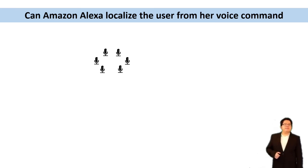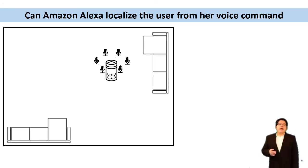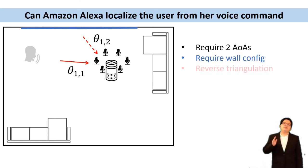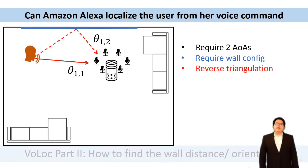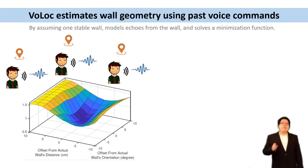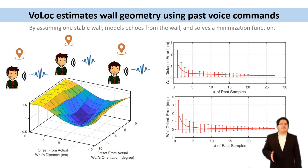So our target is like this. Imagine a house where Alexa is using the microphone array, and imagine the user is giving a voice command. When the user speaks, the voice arrives over the line of sight paths and the echoes. Volock wants to use these commands to estimate the user's location. Observe that Volock already knows these two AOAs, but it's not enough. We also need to know where the wall is, so Volock can use the reverse triangulation to locate the user. To find the wall configuration, we run optimization on all the past commands. We model echoes from the wall and solve a minimization function. From the plot, we can see that the wall config converges within just 10 commands.